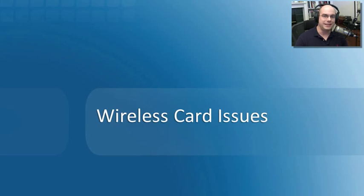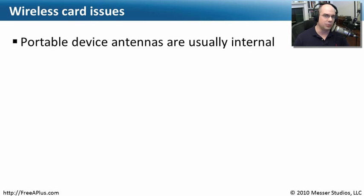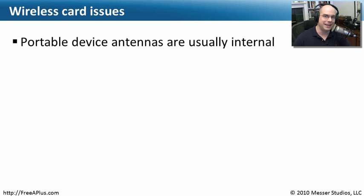On laptop devices, we make extensive use of wireless technologies. We really want to be completely disconnected when we're on portable devices — no network cable, no power connection. When you run into wireless problems, it becomes a bit more of a challenge. The antennas on these connections are usually inside the laptop itself, often connecting to a piece of metal like the LCD display. You'll also want to look at the wireless card itself and make sure the wireless antenna connection is on there.